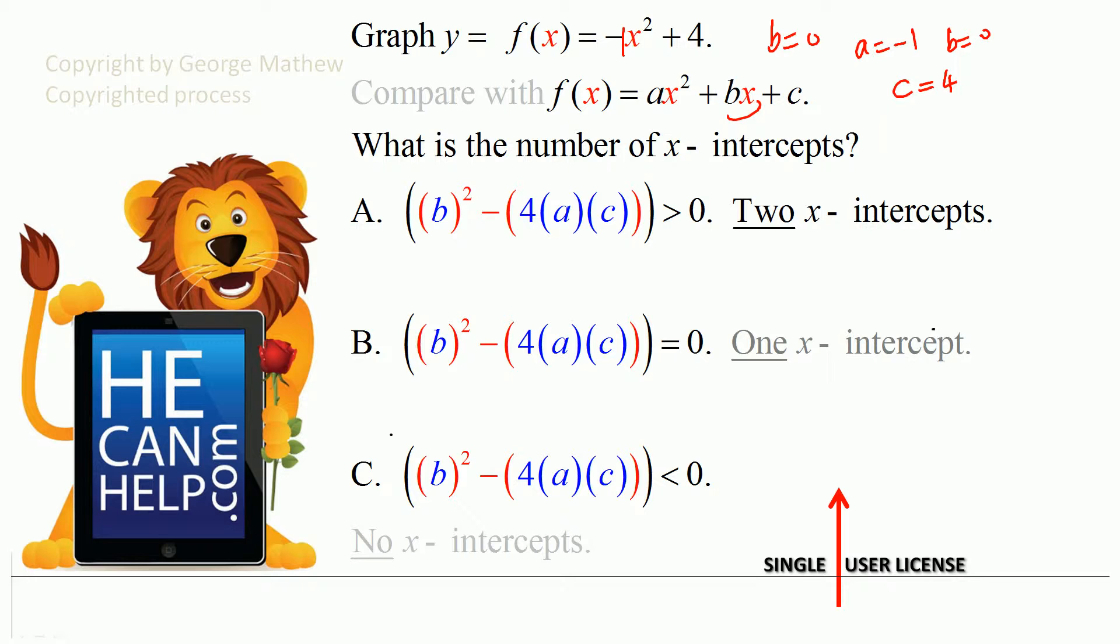So what is b squared minus 4ac? b squared is 0 squared minus 4 times a, which is negative 1, times c, which is 4. This is negative of negative 16, and that is positive 16.